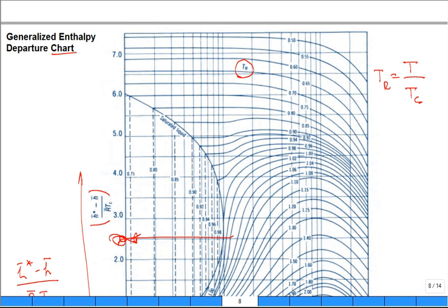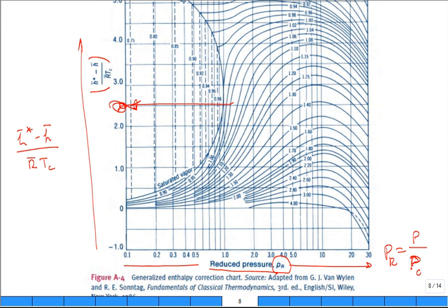So this y is read by first coming in with the PR. Maybe the PR is 2, as an example. And the TR is 1.4. You would find where they intersect and you would read off that value, maybe it's 1.2. Doesn't that look like about 1.2? And that's how you use the chart.